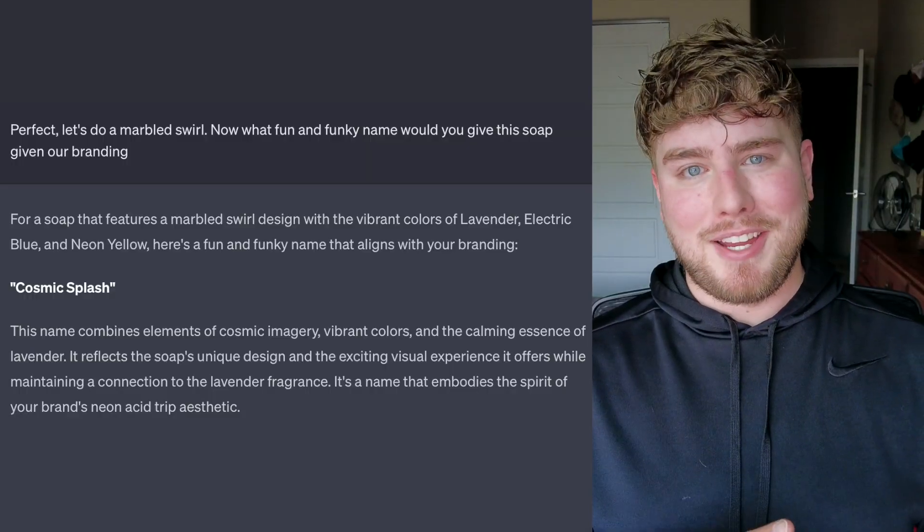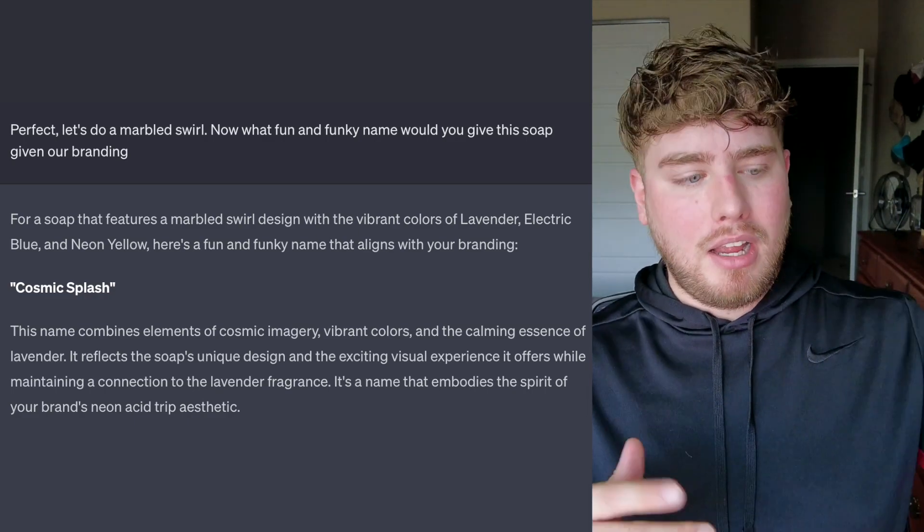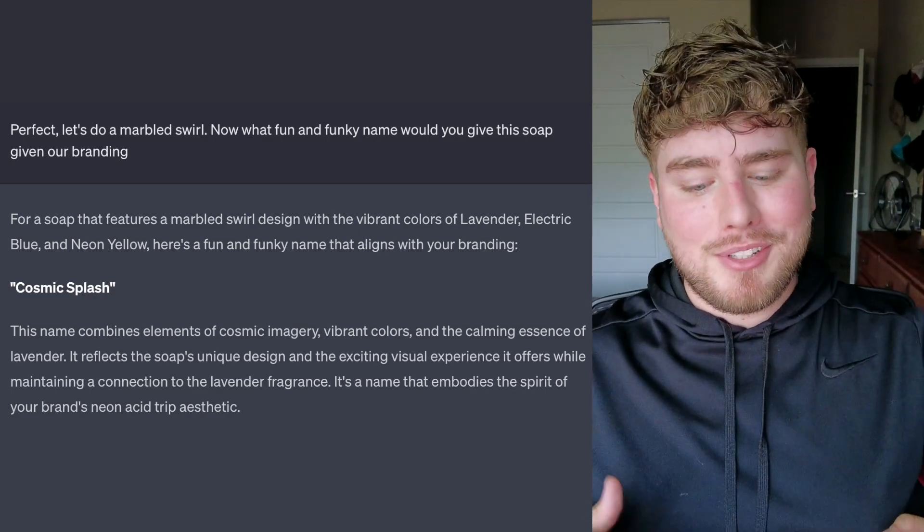The best part about all of this is the name that it picked for us. So we are excited to show everyone how we're going to make Cosmic Splash. When I got that name, once we went through all the parameters, I was so excited. So Cosmic Splash is a blend of lavender and lemon. Think of it as like a lavender lemonade. It's got funky psychedelic swirls of electric blue, neon yellow, and lavender. So if you want to watch us make Cosmic Splash, let's get right into it.